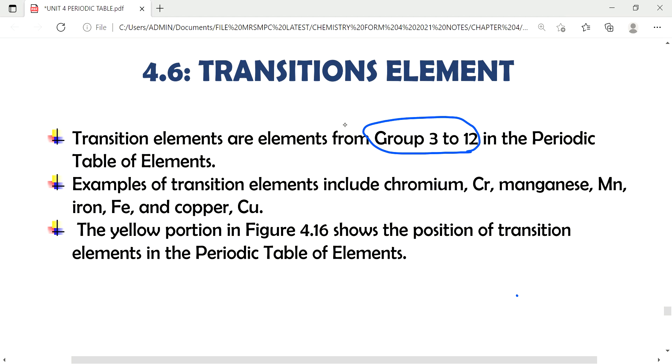So these are example of transitions element. Actually there are a lot of transitions element that we have in periodic tables. So example is chromium, manganese, iron and copper.